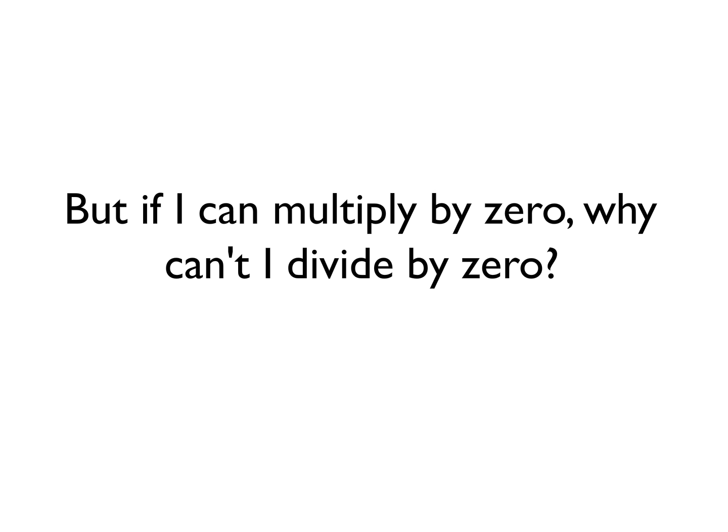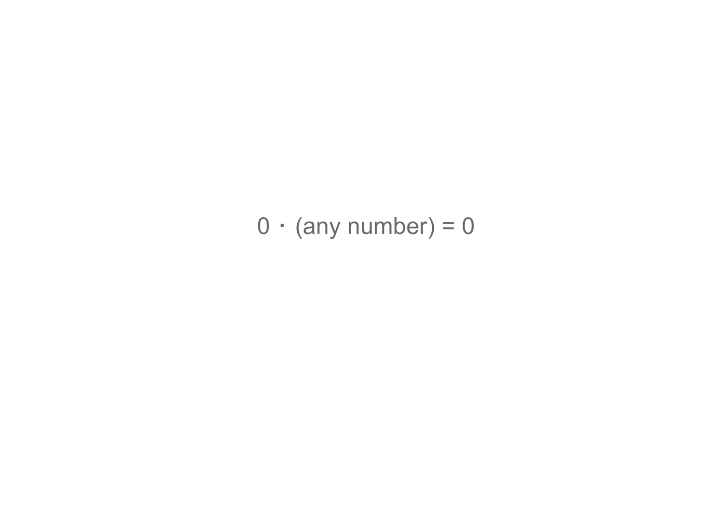But if I can multiply by zero, why can't I divide by zero? When you multiply by zero, the result is always zero. How does this affect division by zero?